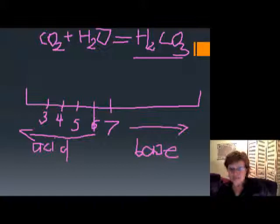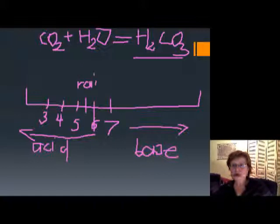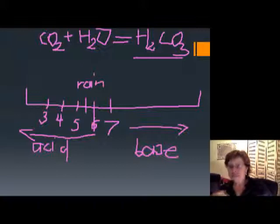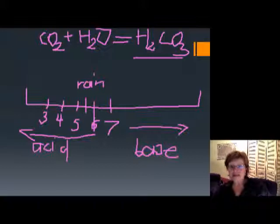Therefore, any rainwater is never going to be neutral — it's going to be acidic. Naturally, without humans and the acid rain we produce, normal rainwater will have a pH of 5.5. Because rain is a weak acid, even silicate rocks through time will weather away chemically. Because of naturally occurring carbonic acid in rain, silicate minerals slowly weather away to produce soil.